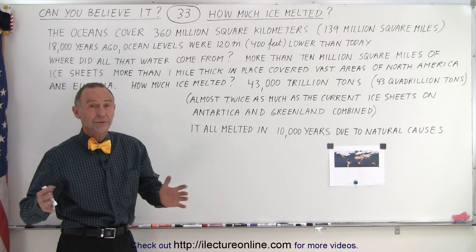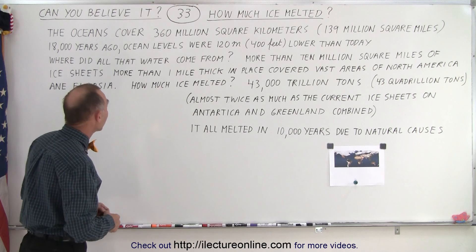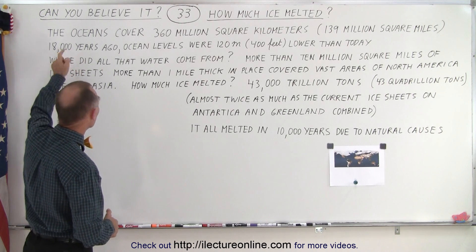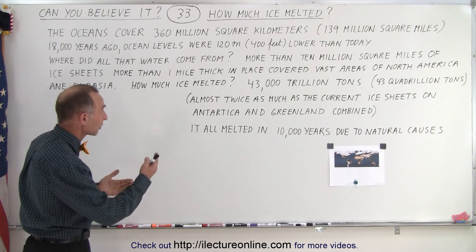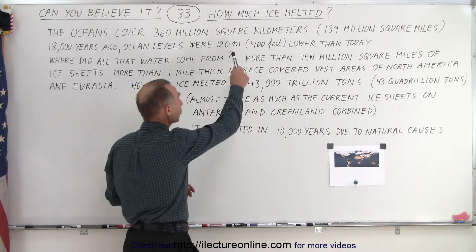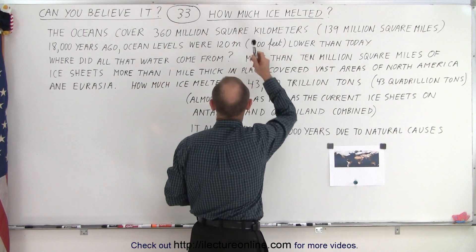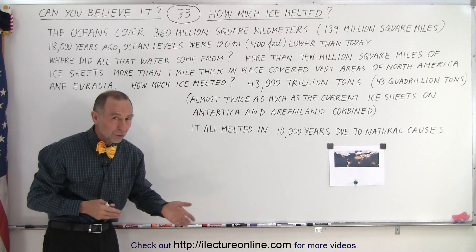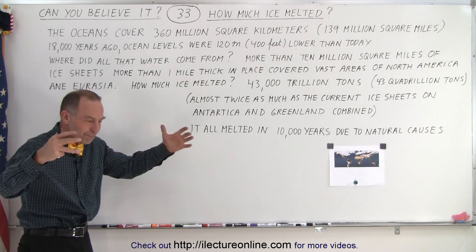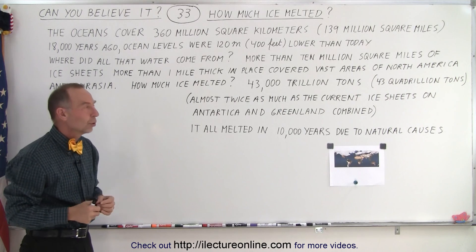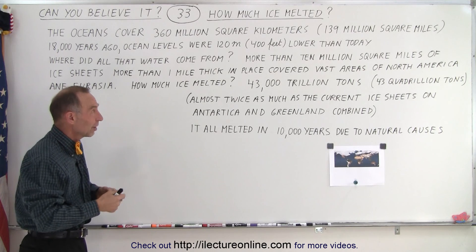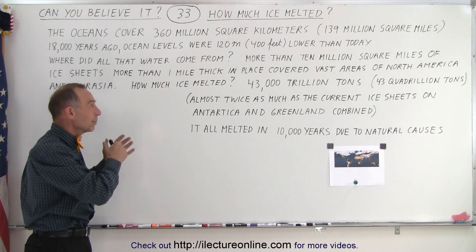About 71% of the Earth is covered by oceans. From 18,000 years ago to about 8,000 years ago — a 10,000-year period — ocean levels rose by 120 meters. If we multiply 120 meters by 360 million square kilometers and convert that to meters, we can figure out how many cubic meters of water had to melt — the equivalent volume that needed to come from ice.